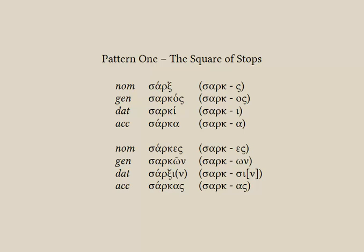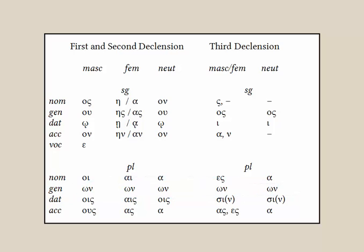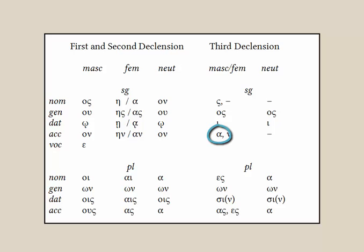Before going further with other patterns in the third declension, let's pause and discuss the fact that several of these third declension endings are also used in the first and second declensions. Here we see both core patterns together. The main endings to note are the omicron-sigma — which can now be a genitive singular as well as a nominative plural — and the alpha, which shows up in neuters and also in the masculine and feminine accusative singular. The alpha-sigma is an accusative plural in both core patterns, and the omega-nu shows up the same across all.